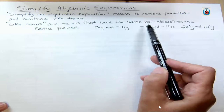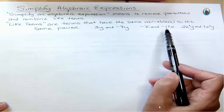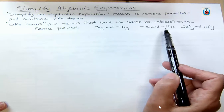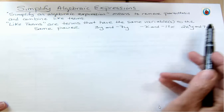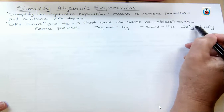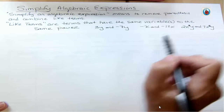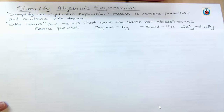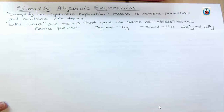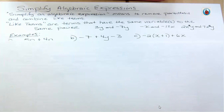Another example: 2x²y and 7x²y are like terms because they both have x to the second power and y to the first power. So you can have more than one variable and different powers, but they have to match exactly to be like terms. So let's look at an example of simplifying algebraic expressions.